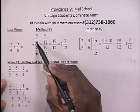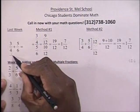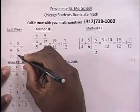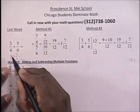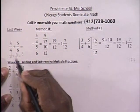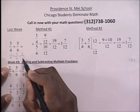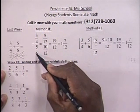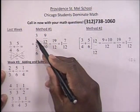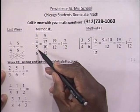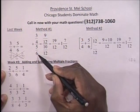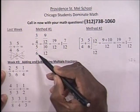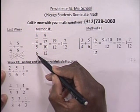So we have 3 fourths plus 5 sixths. What you should not do is add the 3 plus the 5 to get 8, and add the 4 plus the 6 to get 10. That is very, very wrong. Rather, what you should do is take the larger of the two denominators and ask yourself: can 4 go into 6 evenly? Can you multiply a number by 4 to get 6? Hopefully you see that you can't.